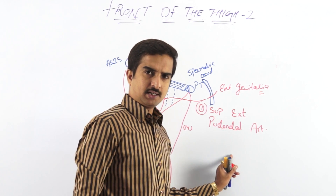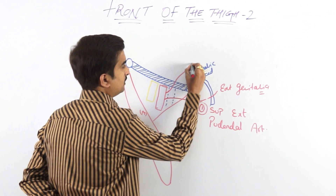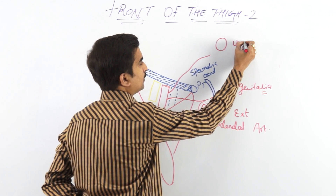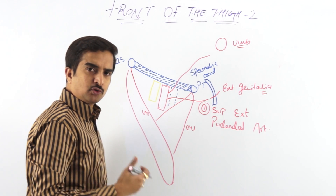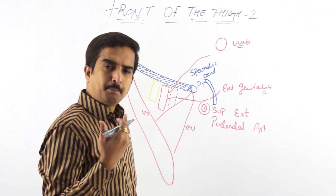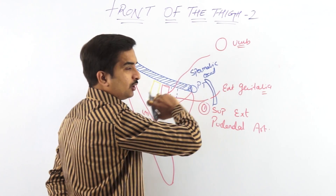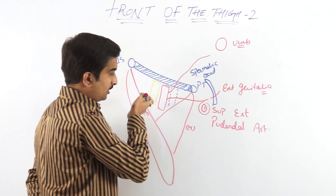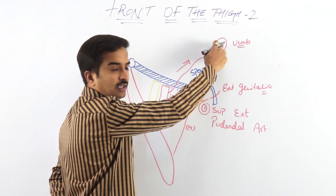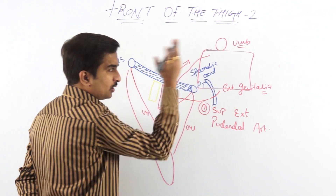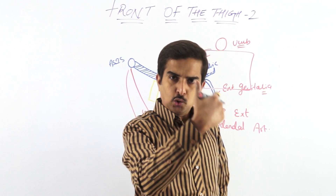The second artery is called the superficial epigastric artery. It also pierces the cribriform fascia and runs upwards and medially to travel towards the umbilicus, supplying the skin below the level of the umbilicus.